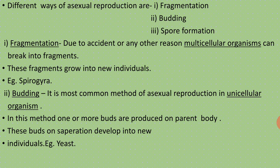Next is budding. It is the most common method of asexual reproduction in unicellular organisms. In this method, one or more buds are produced on the parent body. When the parent body is mature, the buds show overgrowth and on separation they develop into new individuals.